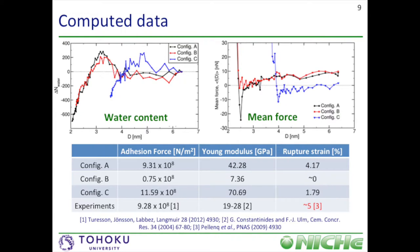When looking at the water content within the simulation box, we observe the presence of a maximum of water molecules. This maximum corresponds to the same inter-particle distance for configurations A and B, but it is shifted to a higher inter-particle distance for configuration C. In the aforementioned case, the shift is due to the particle aspect ratio. For the mean force, we observe a repulsion part when particles are close to each other, then a minimum is reached before rising again at a slower rate. The location of the minimum of force is the same for configurations A and B, while it is located at a larger distance for configuration C.